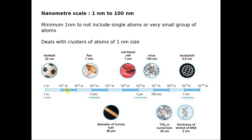Let's look into a few examples on a meter scale that goes from good meters down to the nano level. You start with a football which has a circumference of around 22 centimeters. Then there is an insect or flea of size 1 millimeter. Next comes human hair, whose diameter is of the order of 80 micrometers. Much smaller than that is the red blood cell, which is of the order of 7 micrometers.